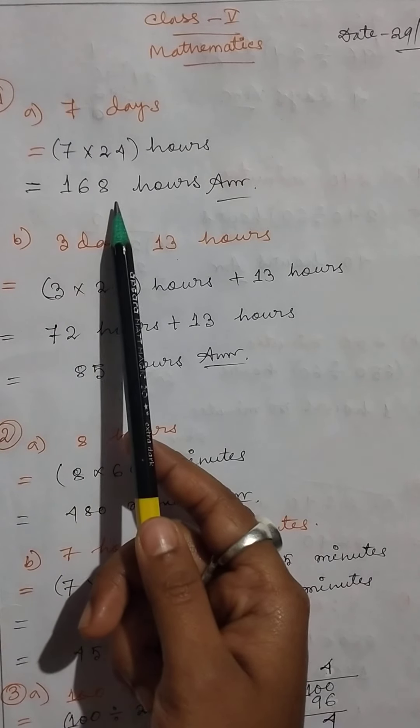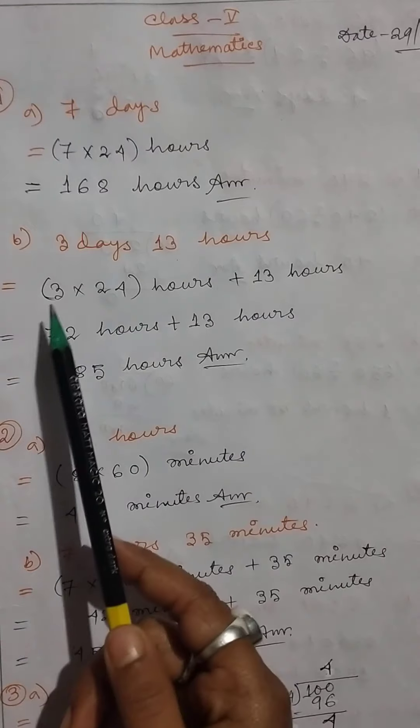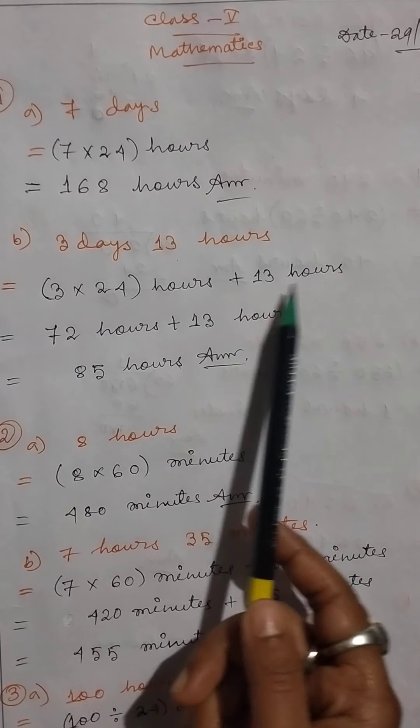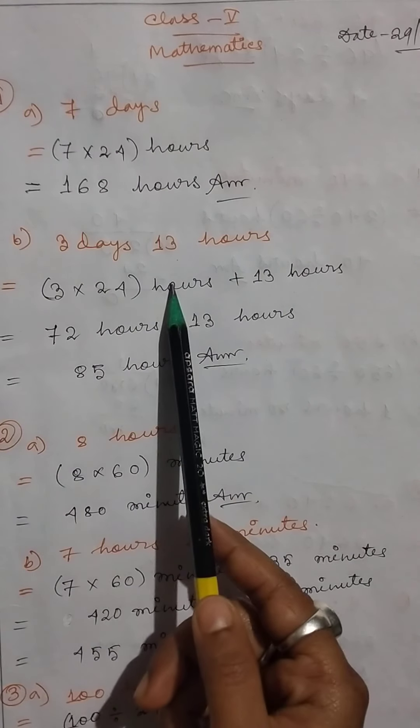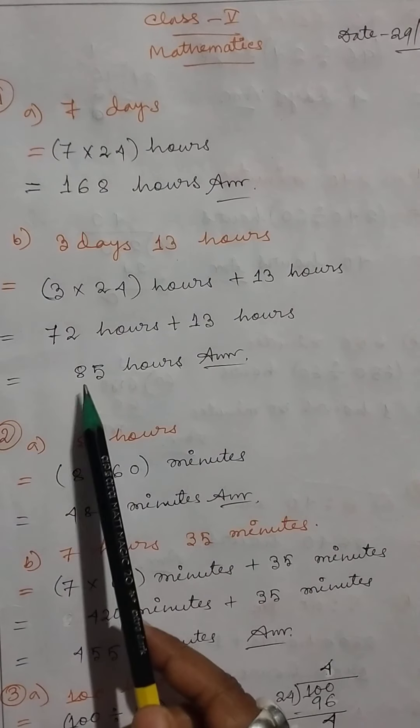Number 1b: 3 days 13 hours. So 3 × 24 hours plus 13 hours. Convert the days to hours then add. 72 hours plus 13 hours equals 85 hours.